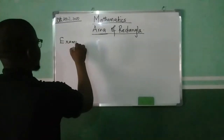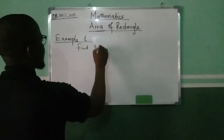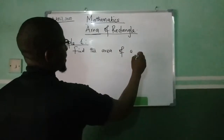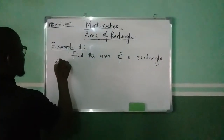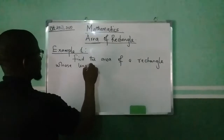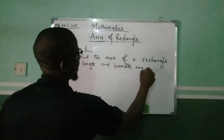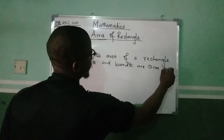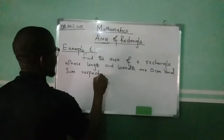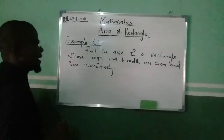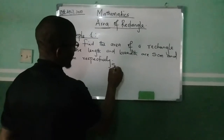Example one: find the area of a rectangle whose length and breadth are five centimeters and three centimeters respectively.